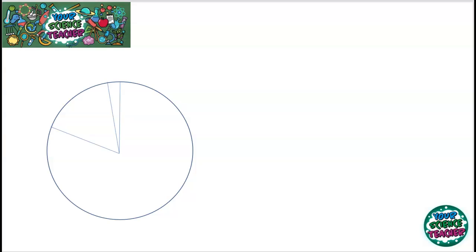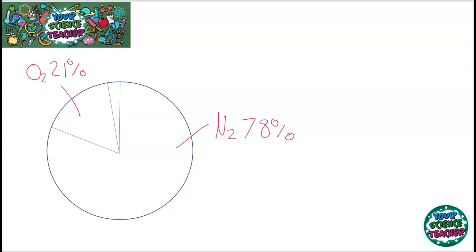When looking at the composition of the Earth's atmosphere, you might be confused into thinking that oxygen is the most abundant gas, because that's what we use for respiration. However, the most abundant gas is actually nitrogen. Being such a stable element, it's hard to remove from our atmosphere, and it accounts for around 78% of all gases. The next largest chunk is oxygen at around 21%, and the remaining 1% is made up of other gases such as carbon dioxide and argon. Small differences in percentages can have massive effects on the planet, which is why it's so important to keep these gases at the same percentage amounts.